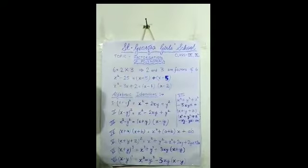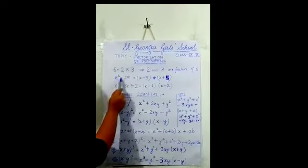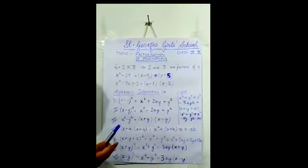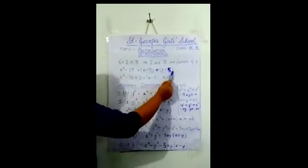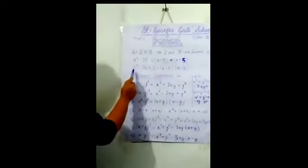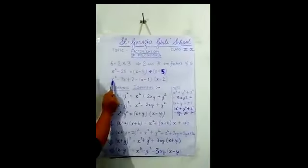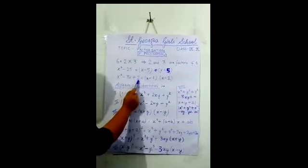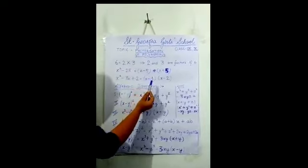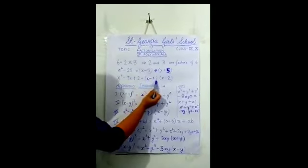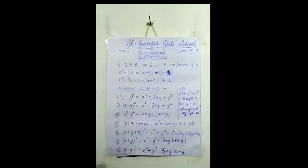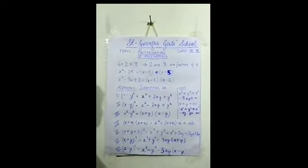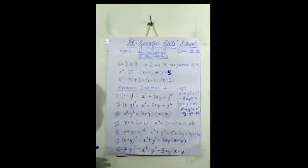In a similar manner, suppose you are given a polynomial x squared minus 25 — how will you factorize it? It can be factorized as (x minus 5) into (x plus 5). Suppose there is a polynomial x squared minus 3x plus 2 — how will you factorize it? It can be factorized as (x minus 1) into (x minus 2).